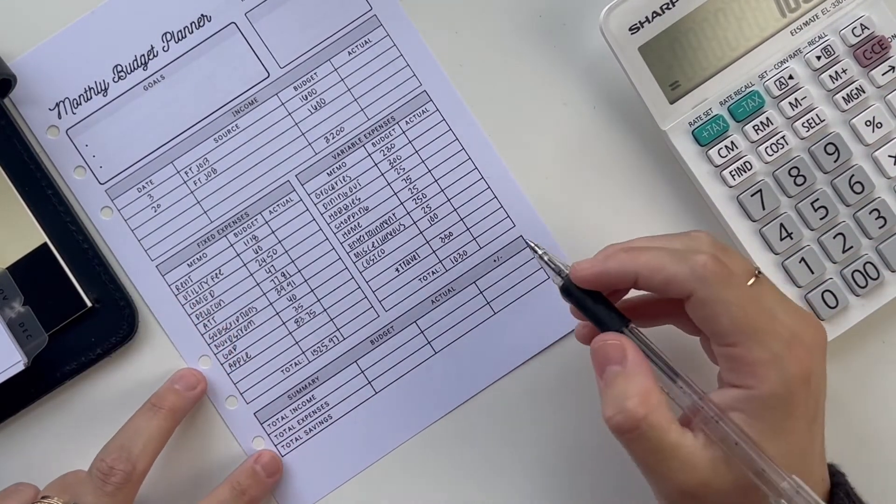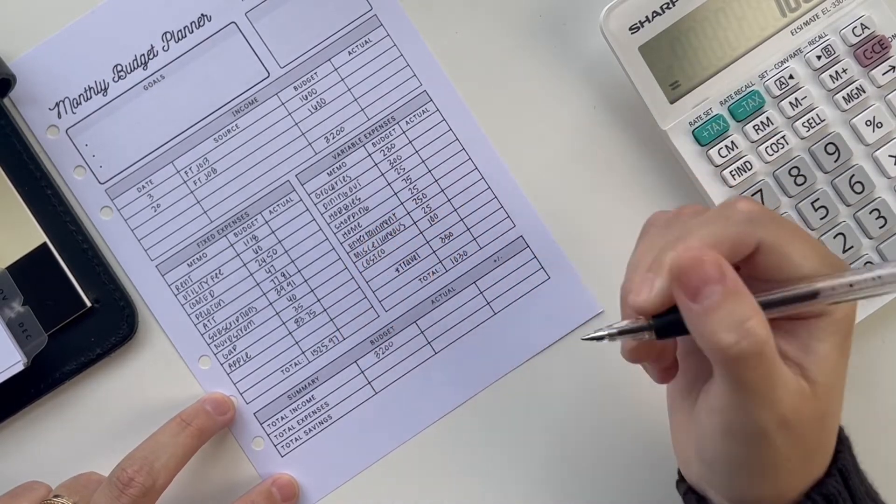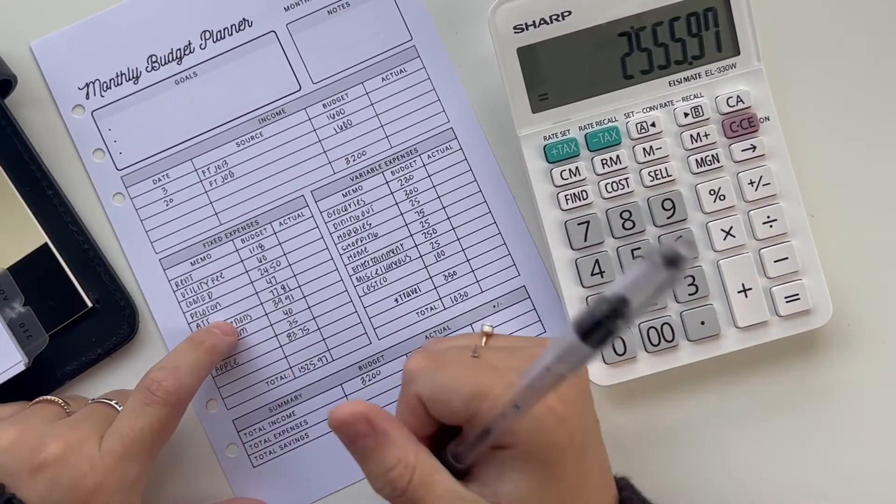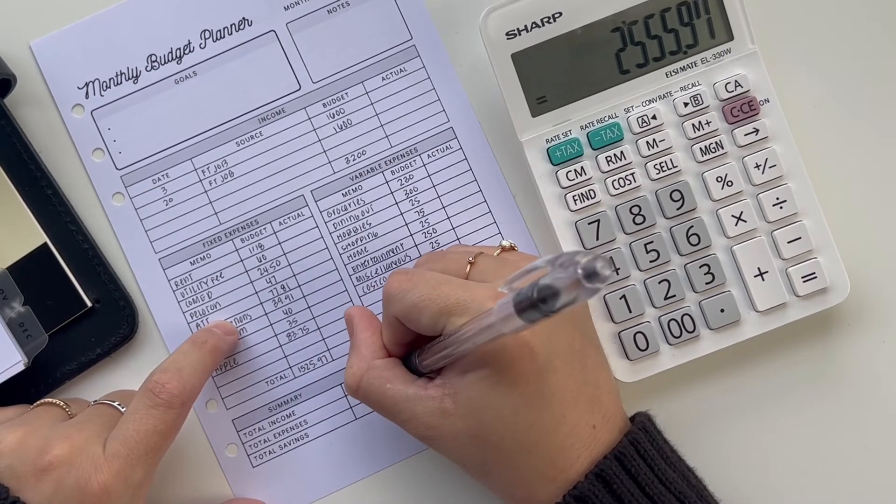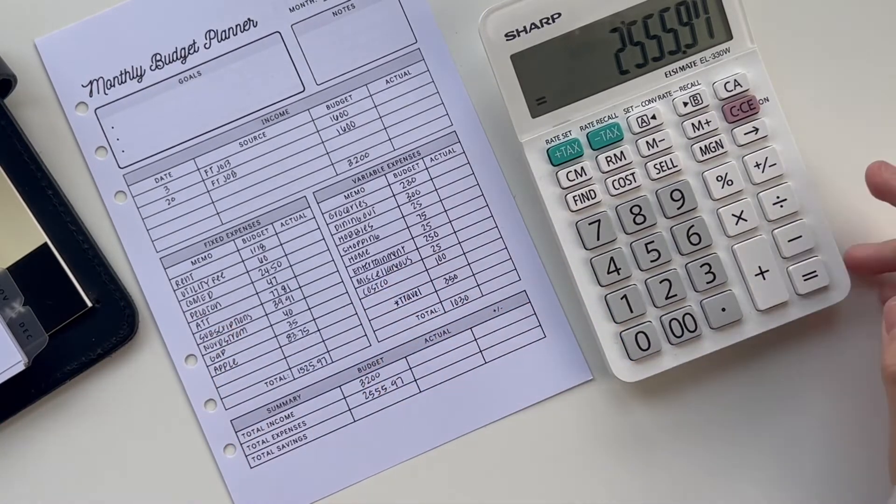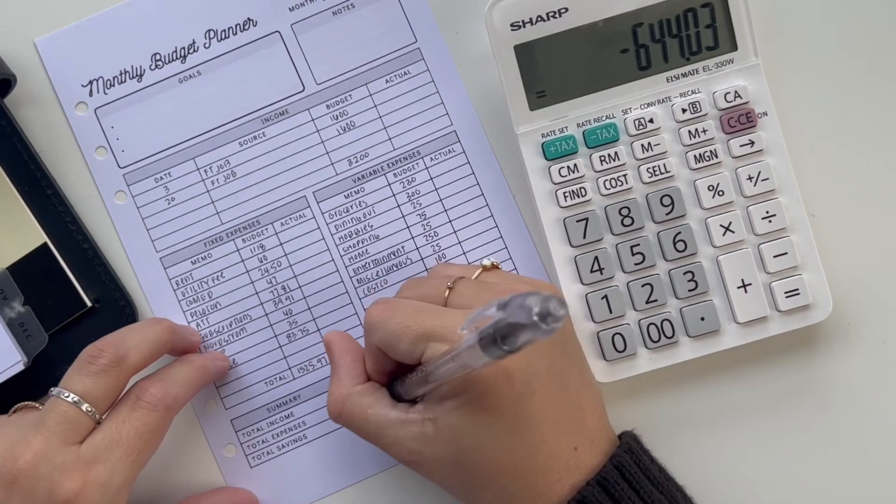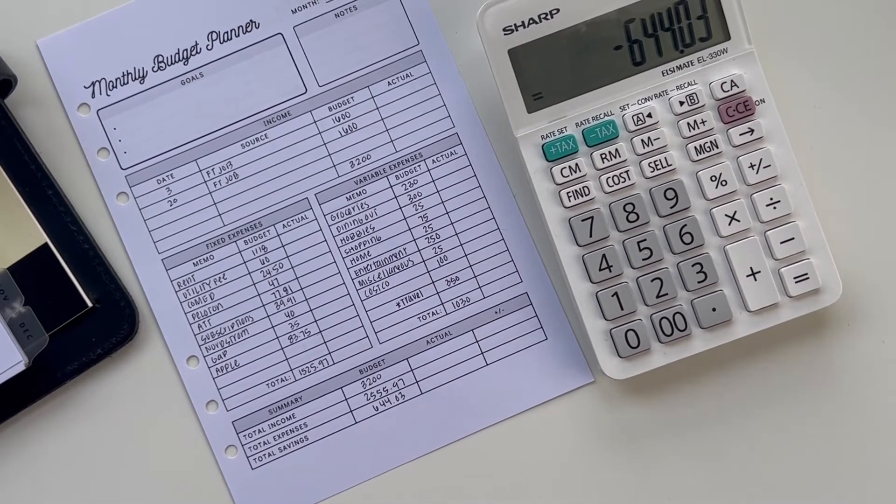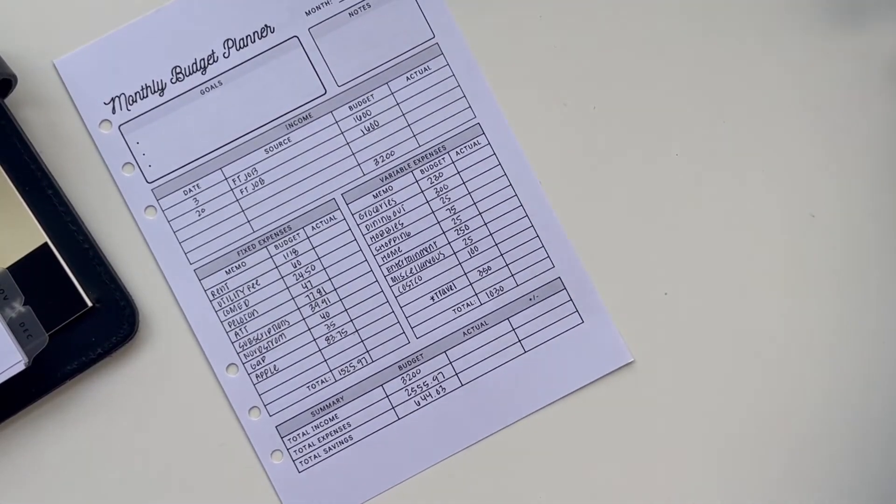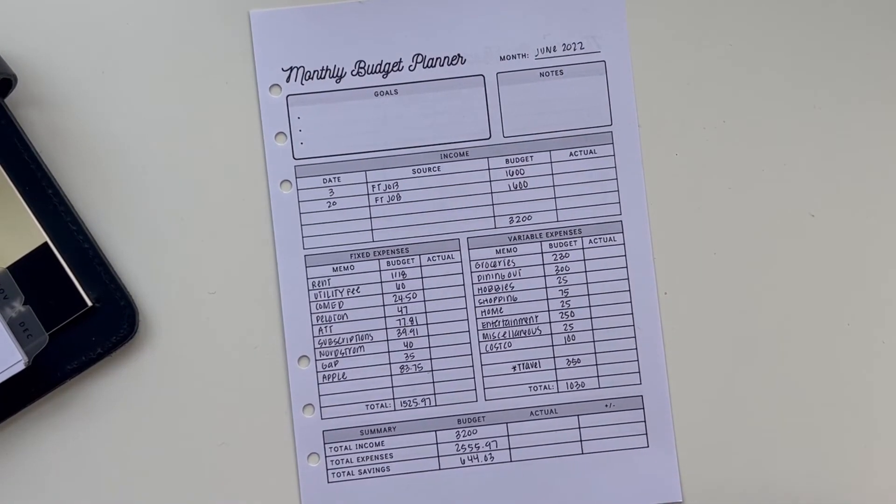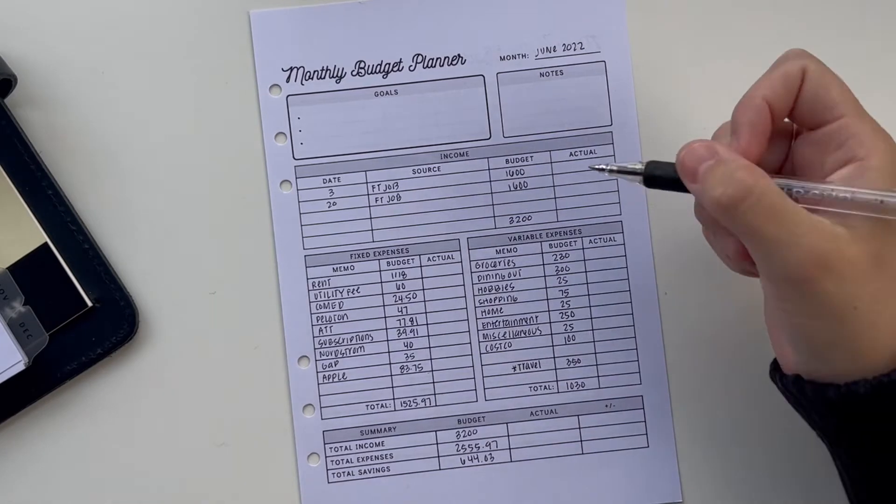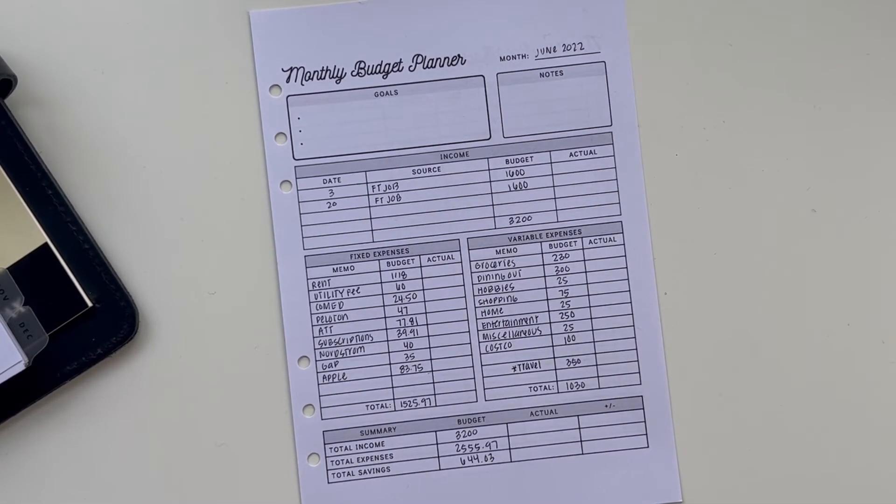To sum it up, we have about $3,200 in income and then expenses would be the $1,030 plus the $1,525.97 would be $2,555.97. And then that would mean I would have $644.03 left over to save for my sinking funds. I was kind of hoping to send a lot more towards my sinking funds finally now that I have a job, but June is just looking like a very expensive month with travel, with visitors, and obviously not having a full paycheck yet. So that's just where we are right now.